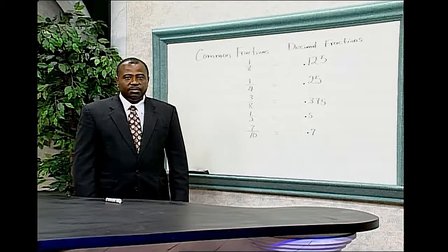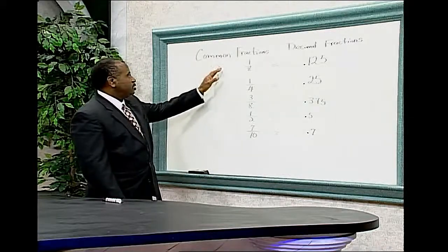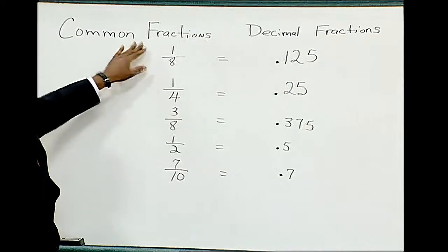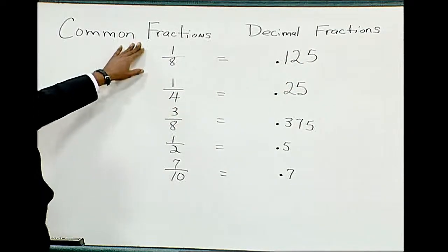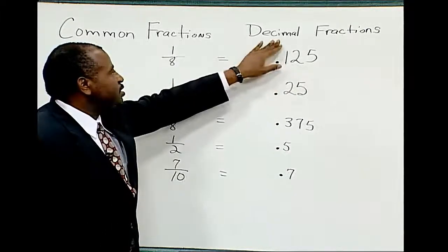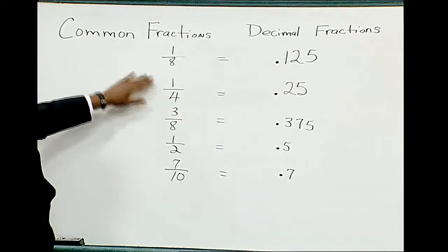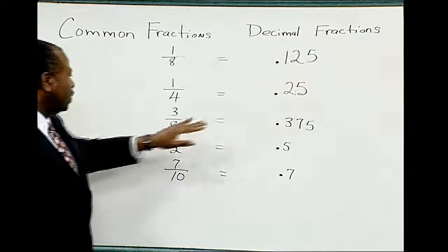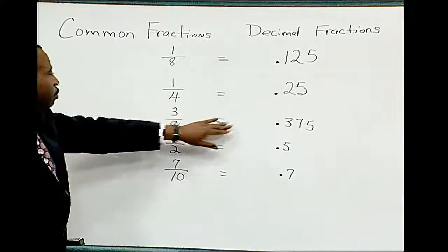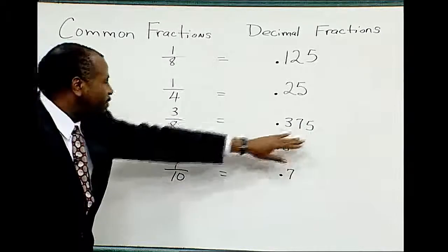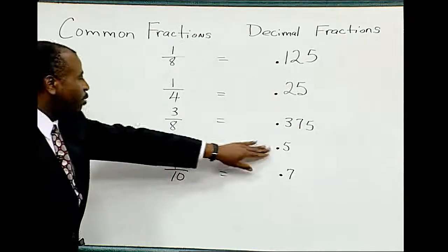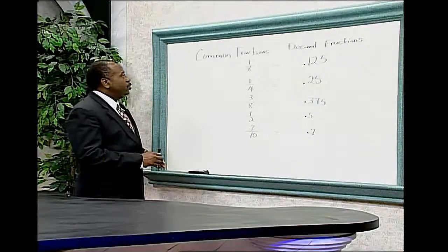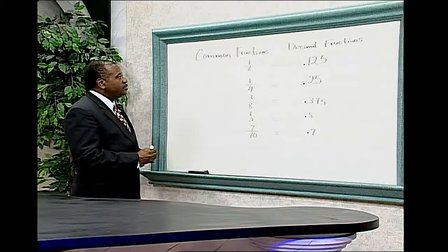Fractions and decimals. There are two types of fractions: common fractions and decimal fractions. 1/8 is a common fraction, but is equivalent to 0.125 as a decimal fraction. 1/4 is a common fraction, but is equivalent to 0.25 as a decimal fraction. 3/8 is equivalent to 0.375. 1/2 is equivalent to 0.5. 7/10 is equivalent to 0.7.